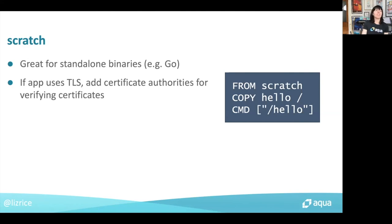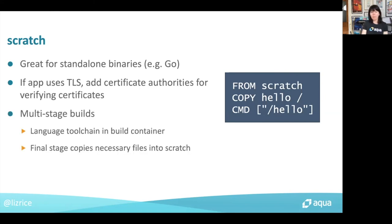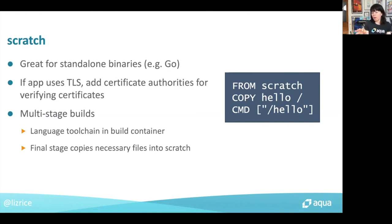One thing to bear in mind is that if your application uses TLS directly — if it makes HTTPS connections — you would need to install the certificate authority packages so that you can verify server certificates and confirm servers are who they say they are. That's one gotcha of using the scratch image. Also, much like Distroless, you can use scratch images as the final stage of a multi-stage build — you can have a language-based image for building the application and then have a final stage that copies your executable and any other supporting files into the scratch image.